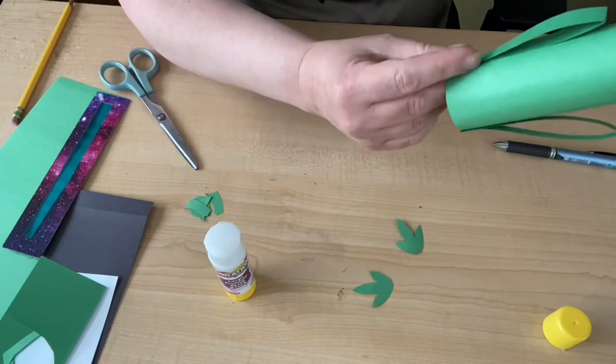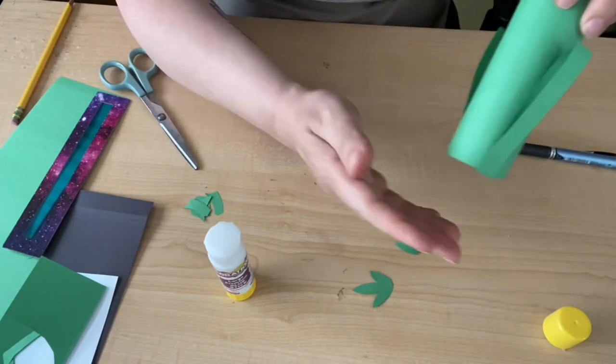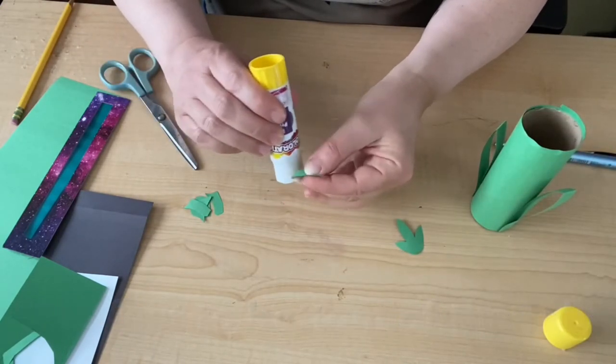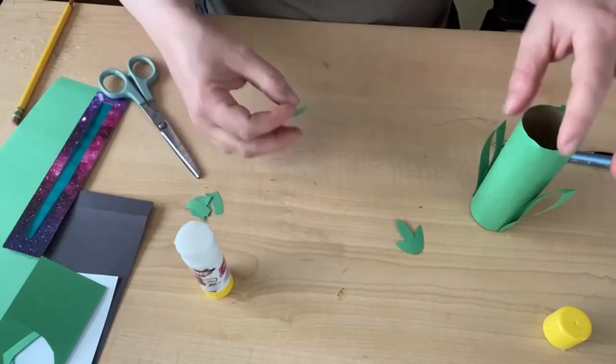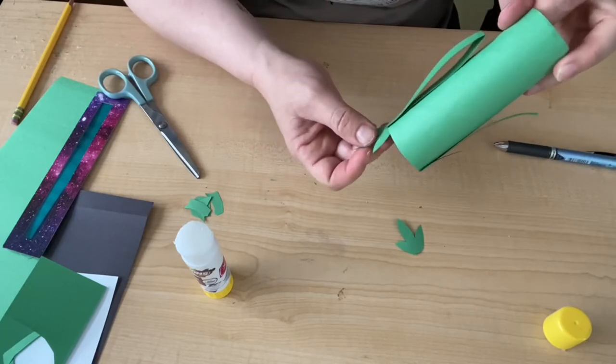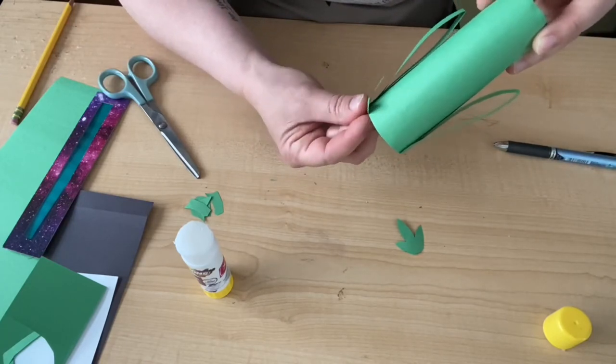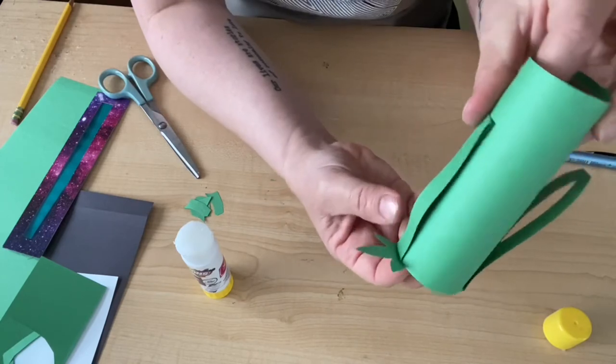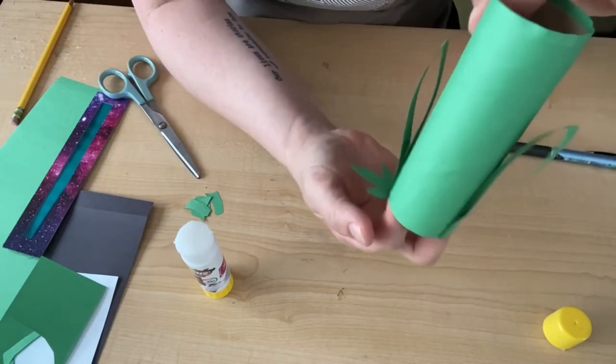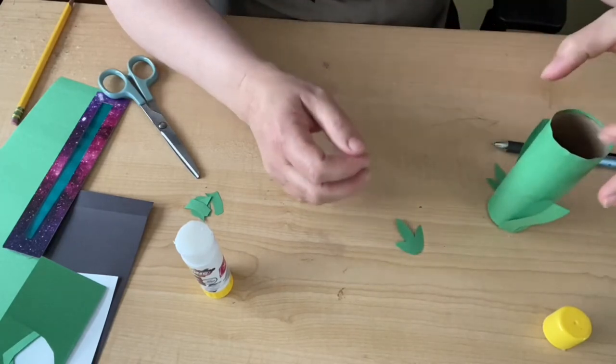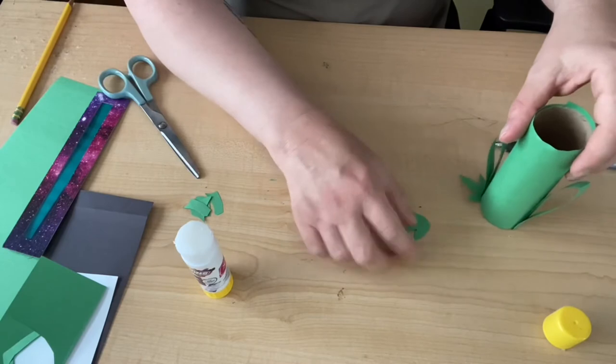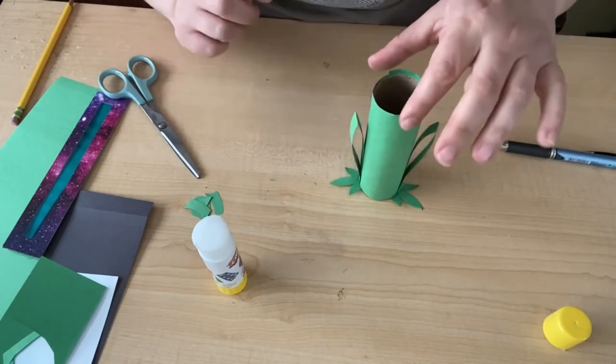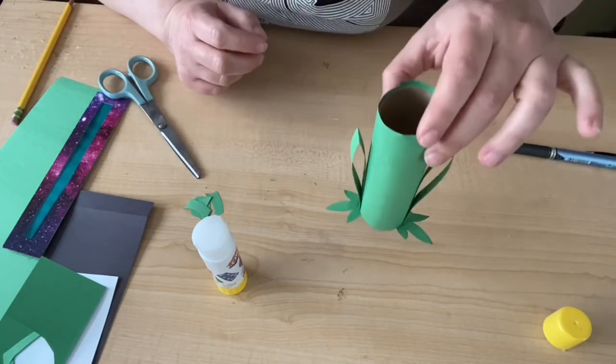Now we've got frog legs and we're going to take our frog feet and put a little bit of glue at the very bottom of the foot. I'm folding it and gluing the bottom of the foot to the inside of the cardboard tube so that it has a place to sit. I'm going to do that with the second one as well. Now we've got our frog legs and feet. Isn't that so cute?